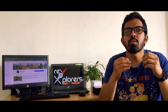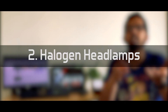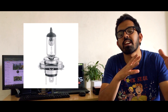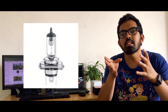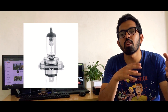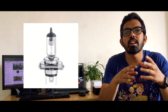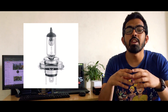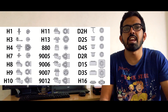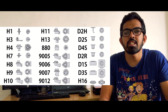The second generation was called the halogen headlamps or tungsten halogen headlamps. These are the upgraded and advanced versions of the tungsten headlamps. They have halogen instead of vacuum or inert gas inside the bulb. With these headlamps came new standards of headlamp socket fittings like the H1, H3, H4, H7, H11, etc.